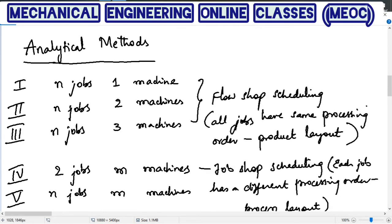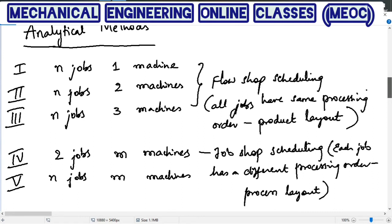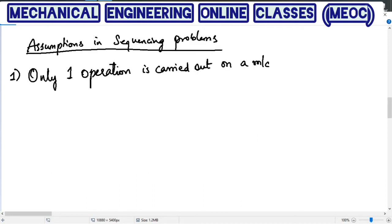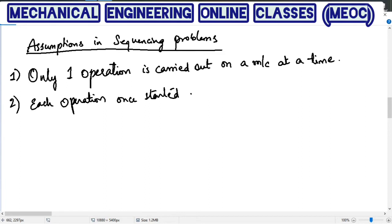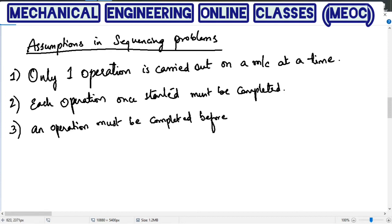Before we begin with how to solve these problems, let us check out the common assumptions in solving any sequencing problem. The first assumption is that only one operation is carried out on a machine at a particular time — the machine under consideration is able to do only one job at a time. The second assumption is that each operation, once started, must be completed before the job leaves that machine.